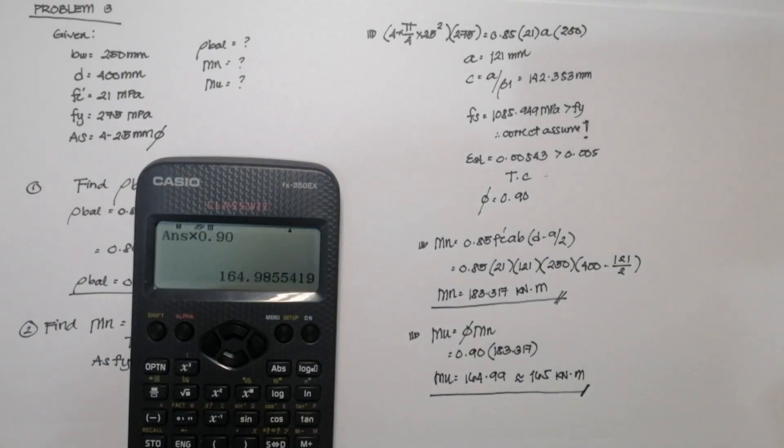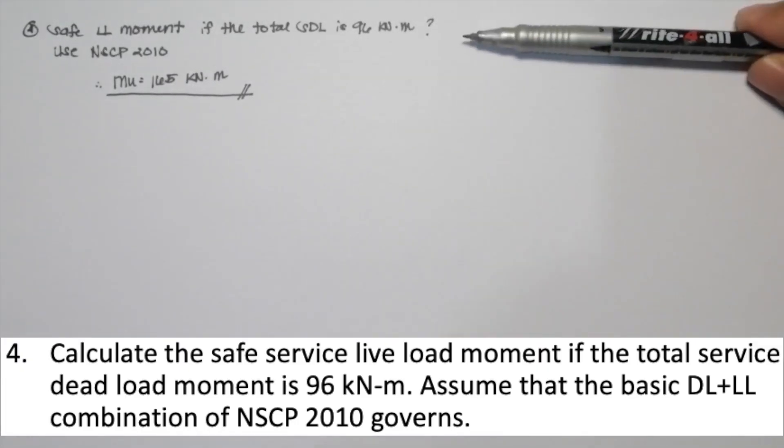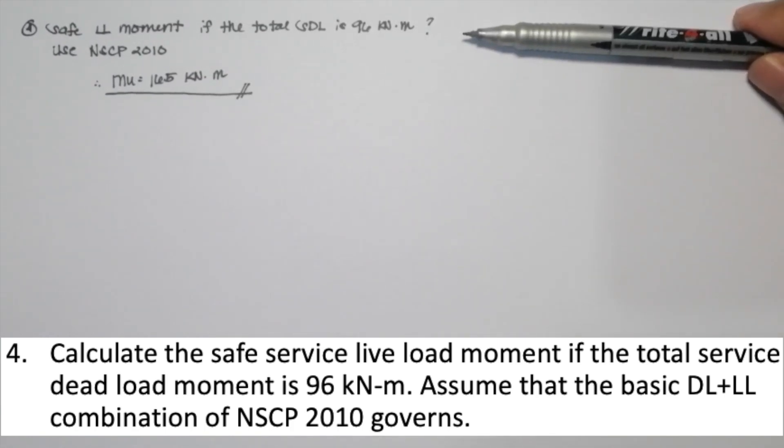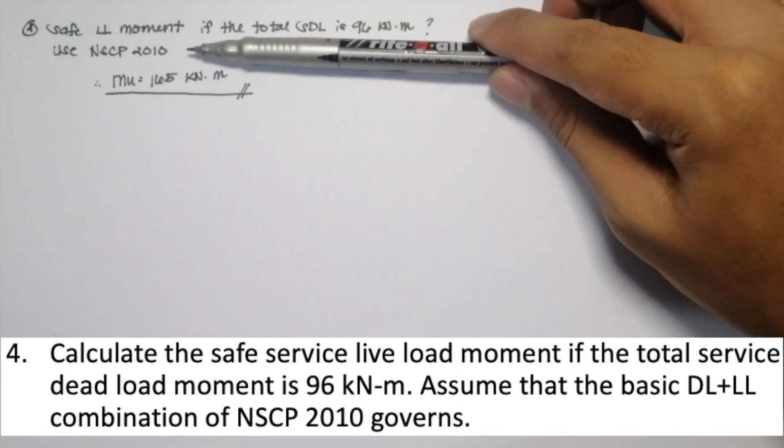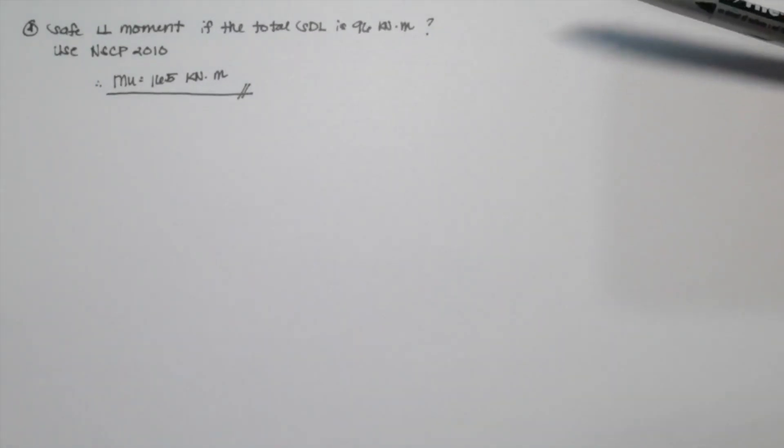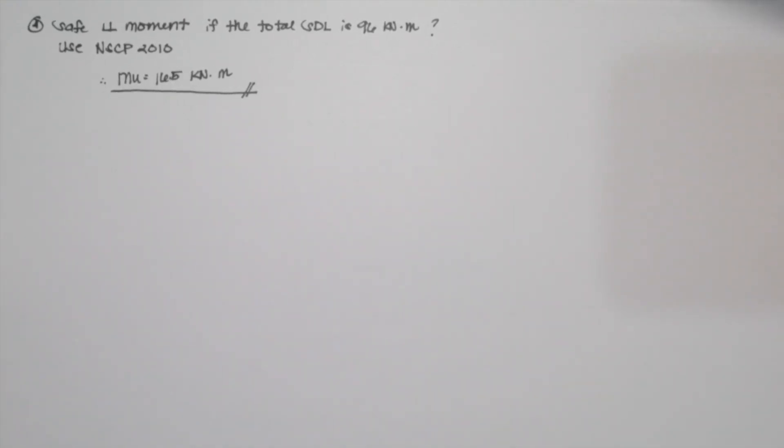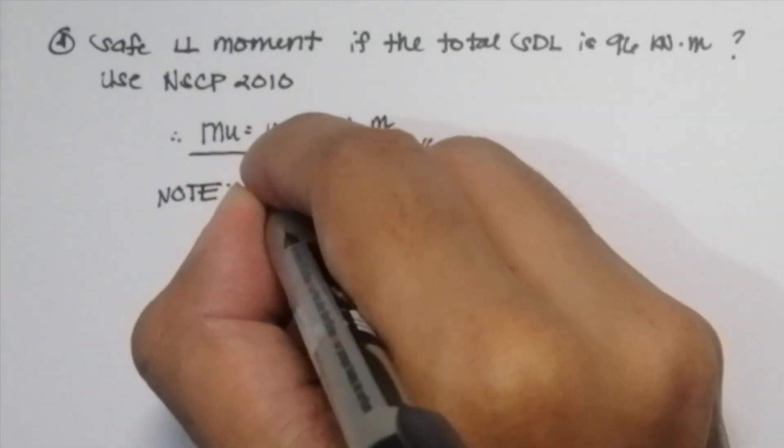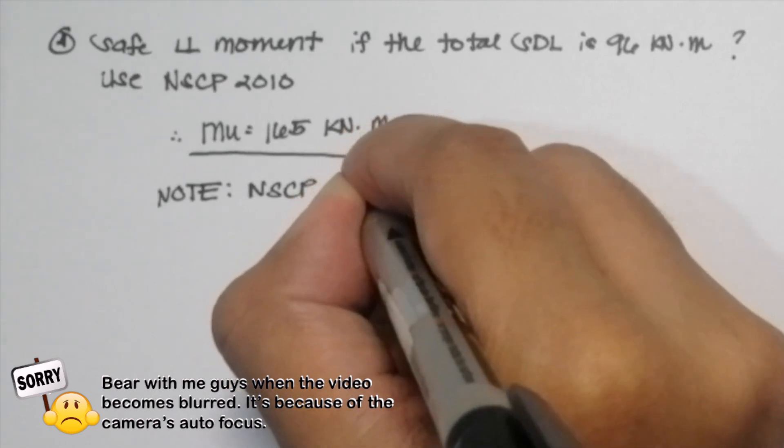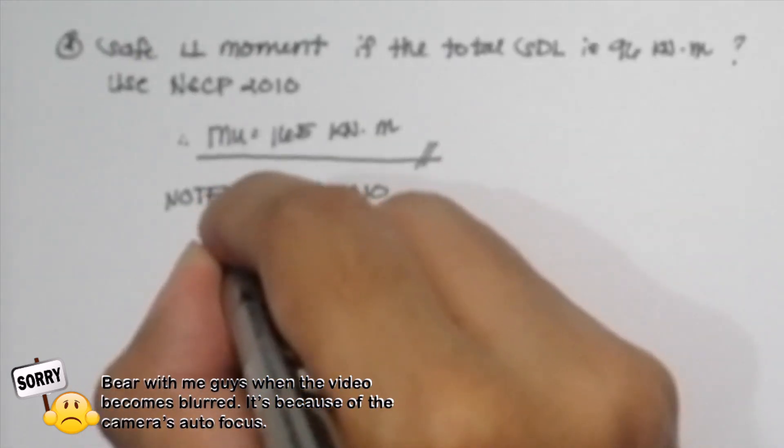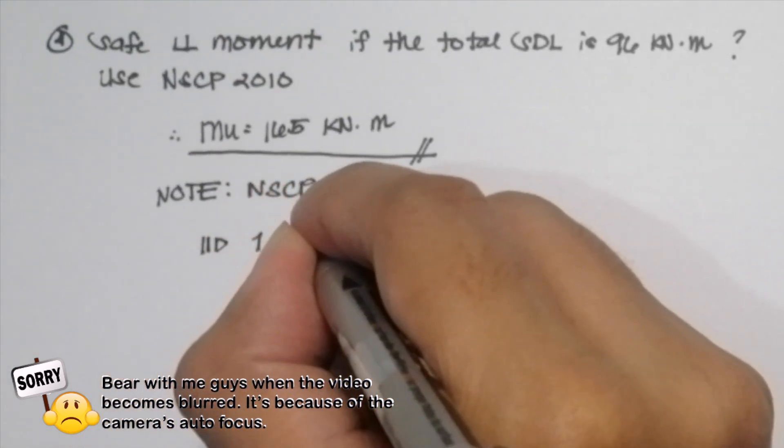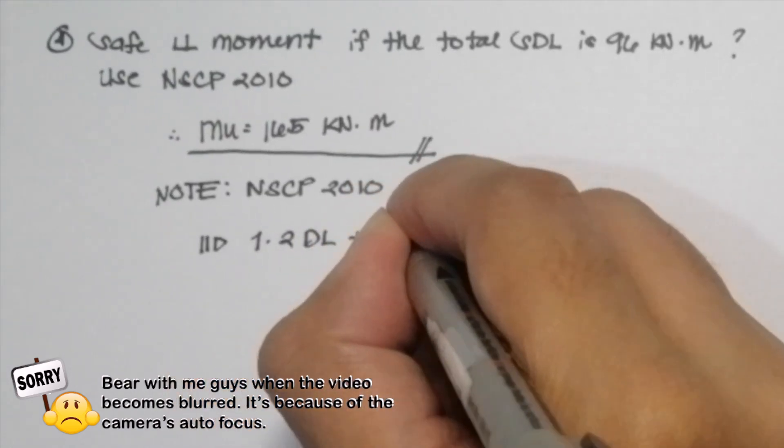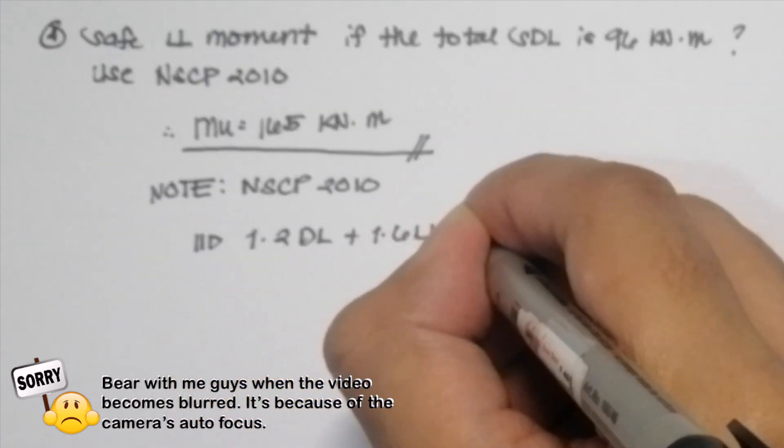So in solving our fourth question in this problem, we need to find the safe live load moment if the total service dead load is 96 kilonewton meter. Use NCP 2010 provisions. So from our previous solution, we got a value of 165 kilonewton meter for our ultimate moment capacity. Take note that in the NCP 2010 and also similar to the NCP 2015, the basic dead load and live load combination is 1.2 for the dead load and 1.6 for the live load.